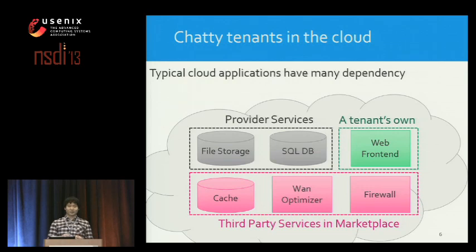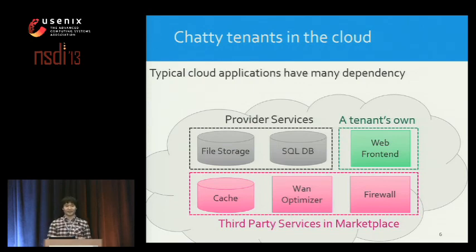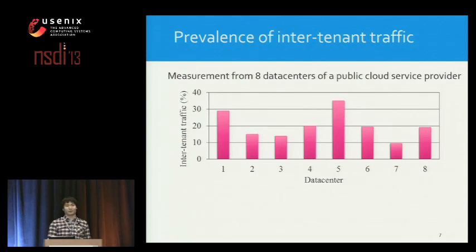Let's see what inter-tenant traffic looks like in data centers. Typical cloud-based web services have many dependencies — they can depend on provider services or even third-party services. For example, in Amazon Web Service Marketplace, there are many companies offering software as a service, such as firewalls, WAN optimizers, or web caching. We believe this will increase. I'm showing the fraction of inter-tenant traffic from eight data centers from a major public cloud provider, and there is a significant amount ranging from 10% to 35%.